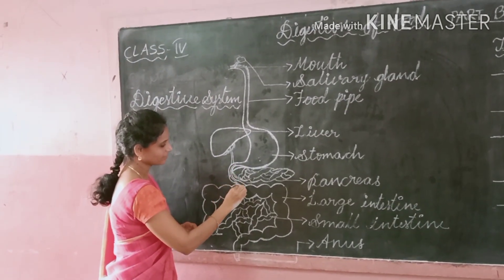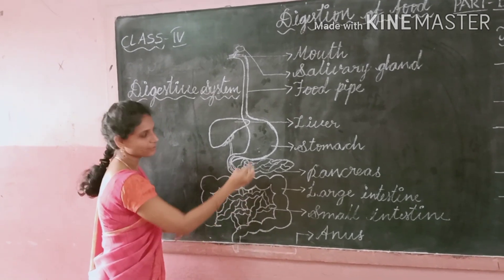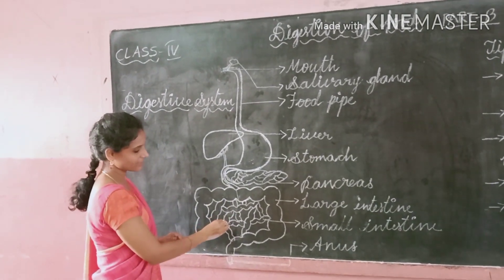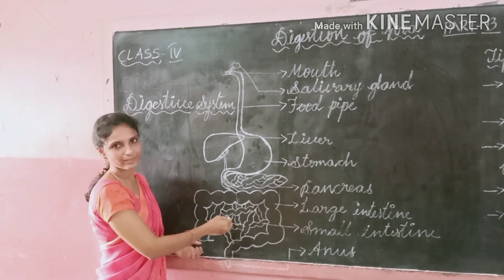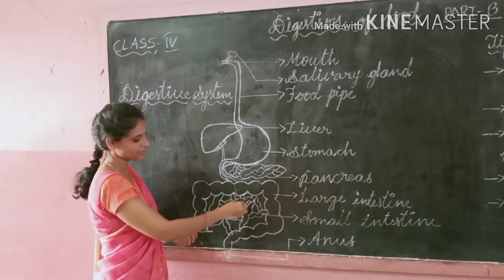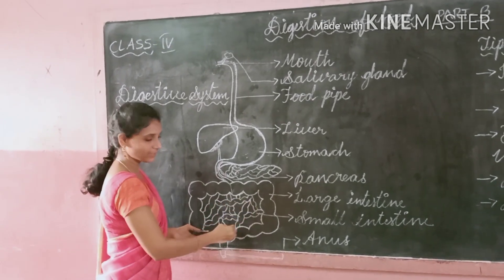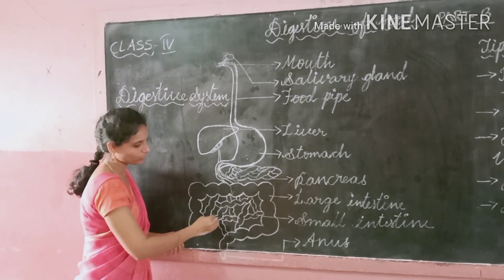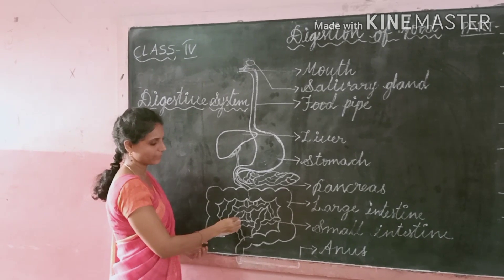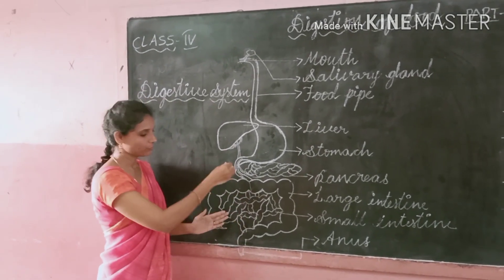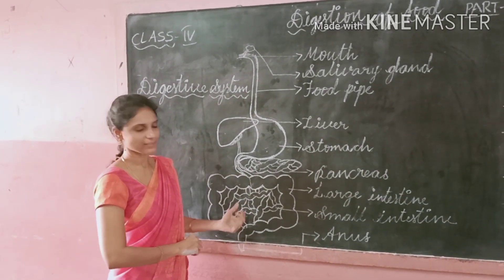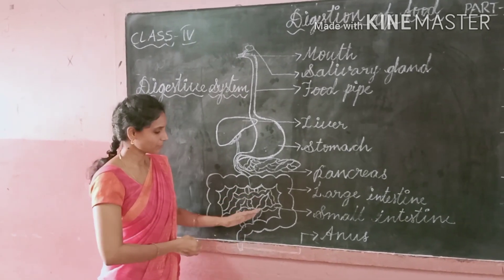After the stomach, the food enters into the small intestine. The walls of the small intestine secrete digestive juices, and the liver and pancreas also release digestive juices into the small intestine. This is like a coiled tube. While passing food through the small intestine, these juices make the food completely digested. The food becomes liquid, and the blood vessels in the walls of the small intestine absorb the nutrients from the digested food.